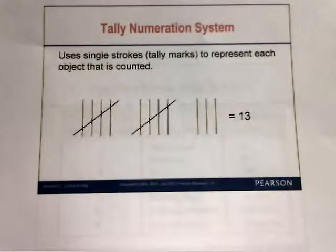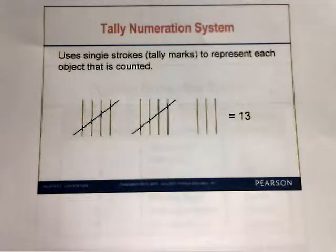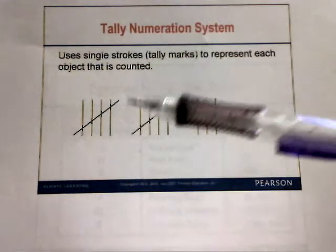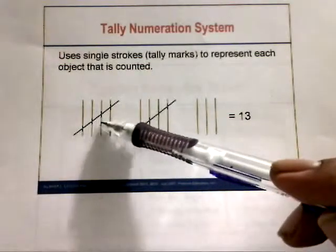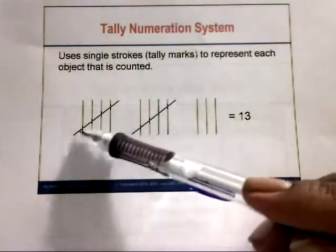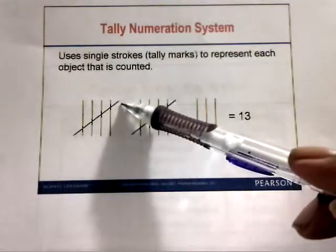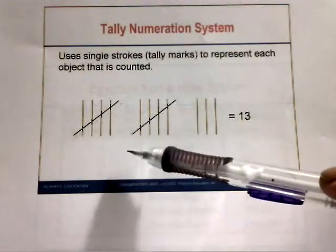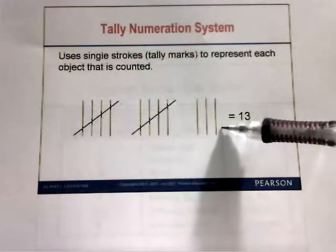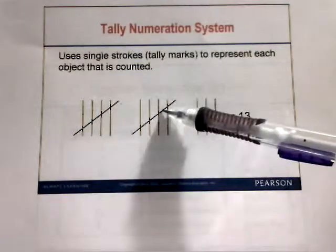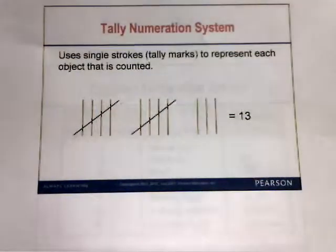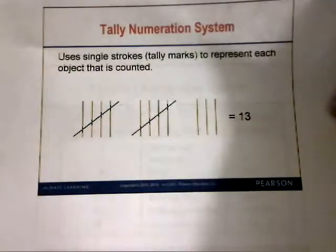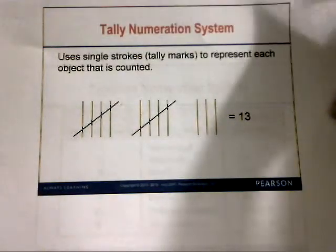Now let's briefly discuss the Tally numeration system. This system uses single strokes — tally marks — to represent each object counted. Four vertical lines with a diagonal stroke across represents 5. For example, two groups of five plus three more vertical lines equals 13. That's basically what the tally numeration system is — you're just doing tallies.